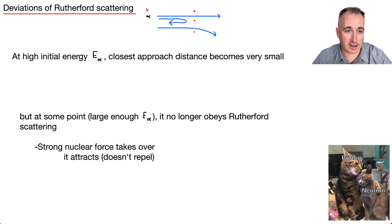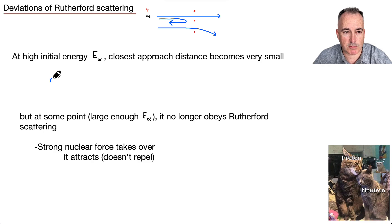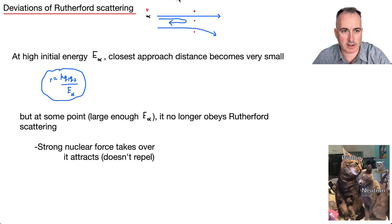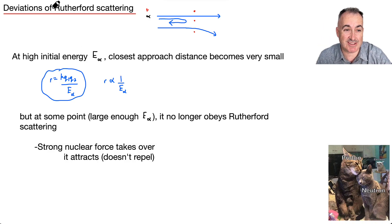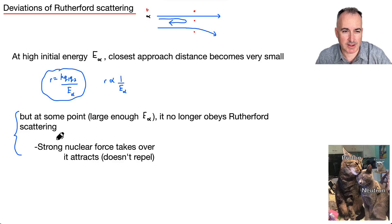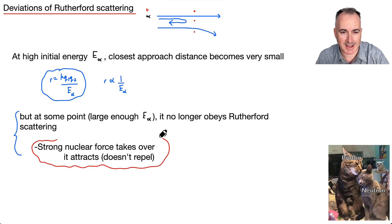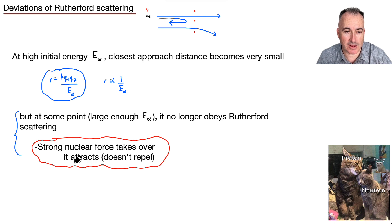There are deviations to this. At high initial energy, the closest approach distance becomes small, since R is proportional to 1 over EK. But as you get closer and closer, there's a limit — eventually it no longer obeys Rutherford scattering. That's because something else takes over: the strong nuclear force, which attracts rather than repels.